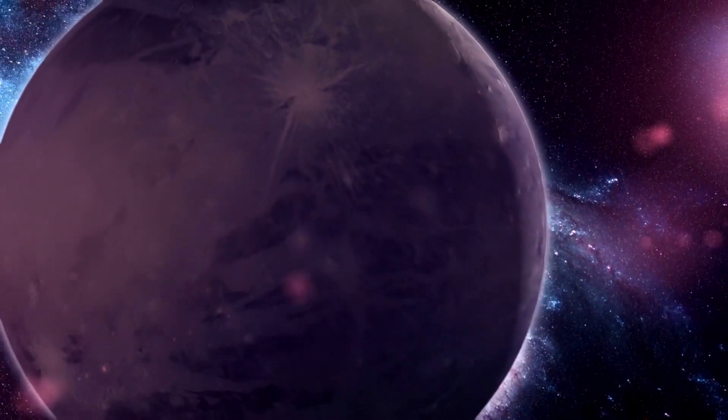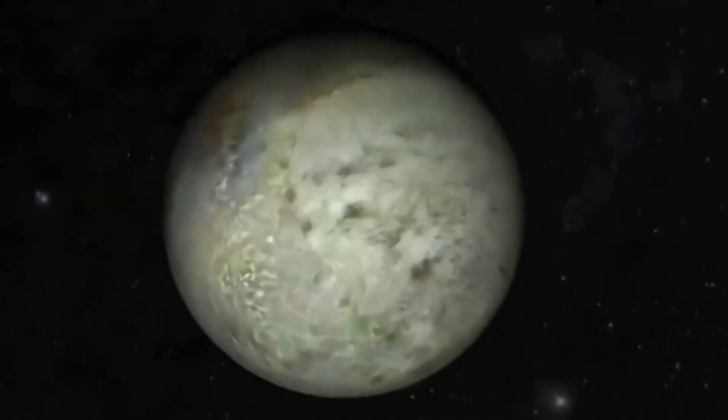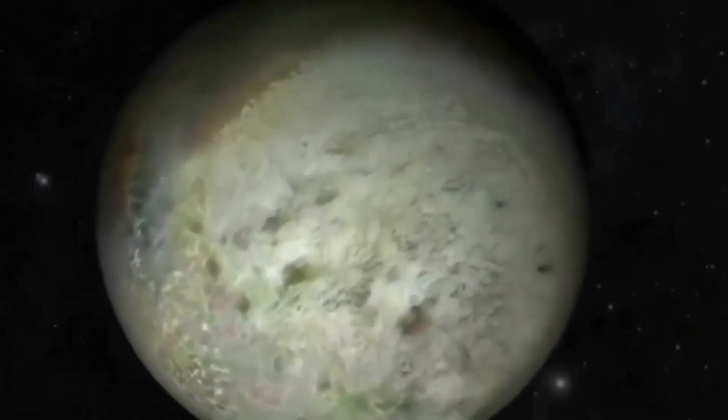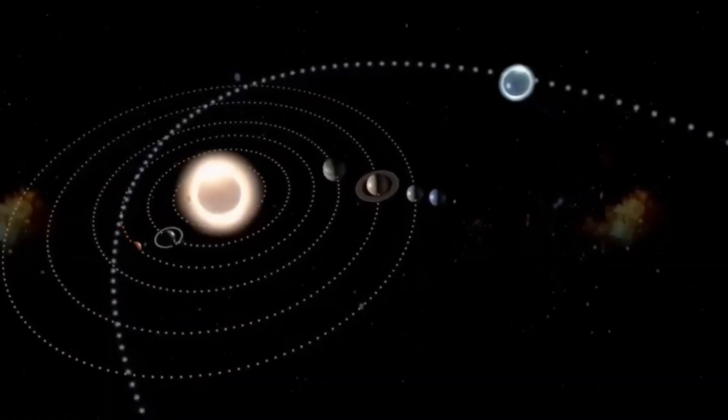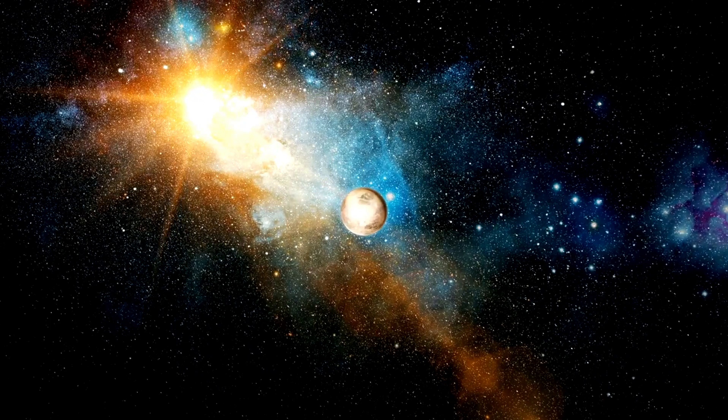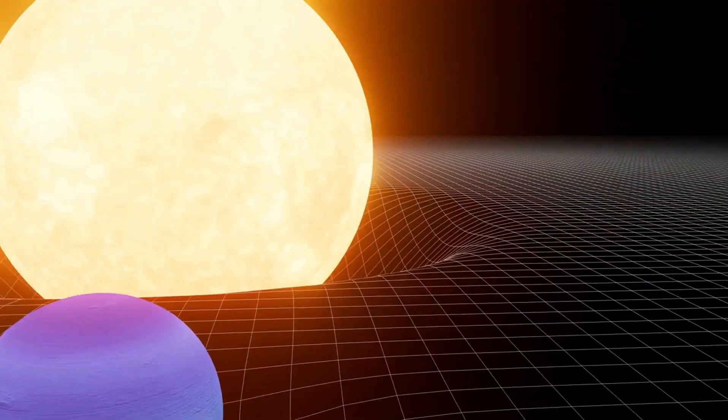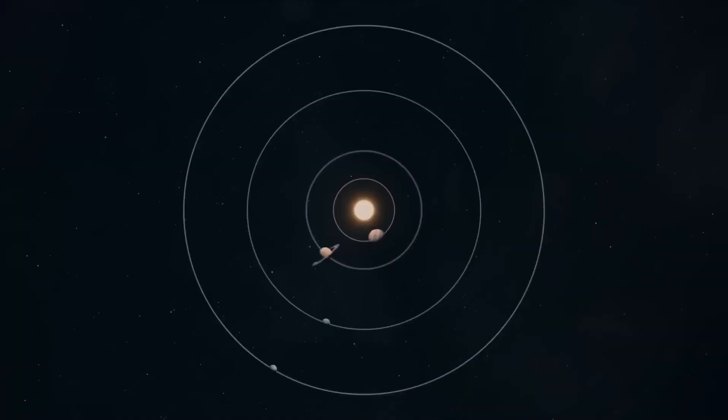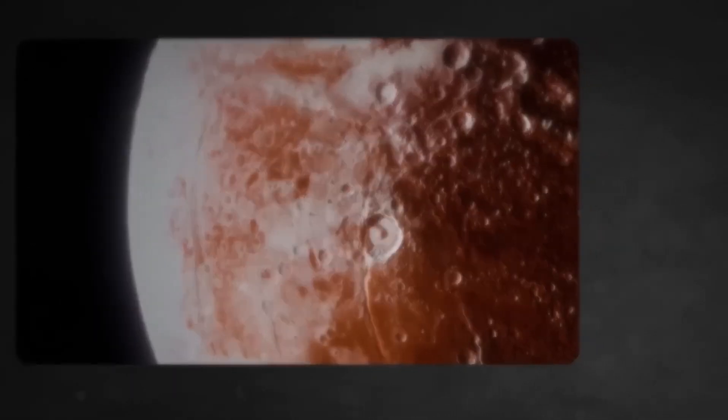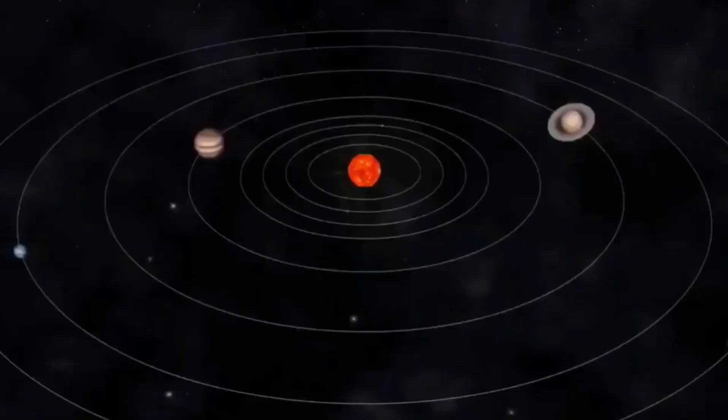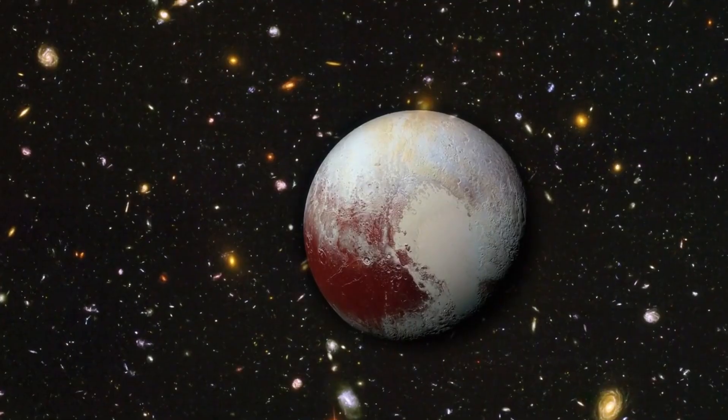Pluto, once hailed as a full-fledged planet, underwent a transformation in its status, being reclassified as a dwarf planet due to its peculiar orbit. Despite this demotion, Pluto still captivates and intrigues the astronomical community. Recent predictions from esteemed scientists like Neil deGrasse Tyson and Michio Kaku have raised concerns about Pluto's trajectory potentially intersecting with Neptune's, hinting at a looming threat of collision between the two celestial bodies, which could have significant repercussions for Earth.